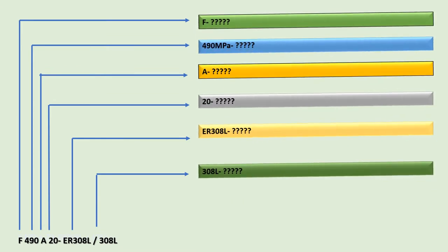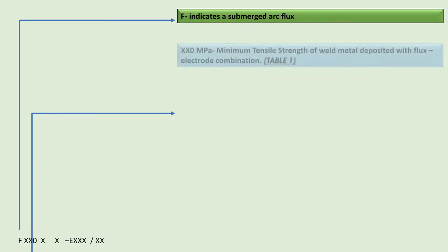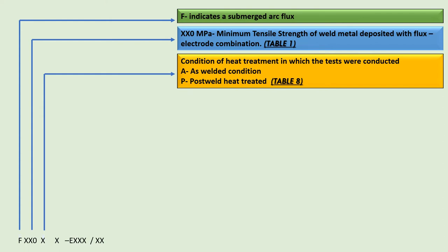Let us understand the designators constituting the flux-electrode classification for SAW. SFA 5.39 is the specification for flux and electrode combinations for submerged arc joining and surfacing of stainless steel and nickel alloys. We have a designator F which indicates a submerged arc flux. After this, we have a three-number designator which indicates the minimum tensile strength of weld metal deposited with the flux-electrode combination. These details are given in SFA 5.39 Table 1.